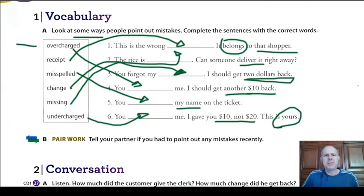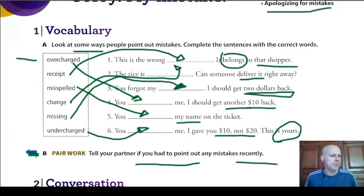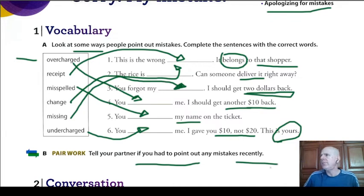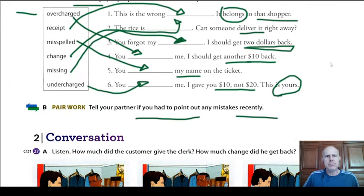Let's go and see Part B. Tell your partner if you had to point out any mistakes recently. For example, I had to ask the bus driver for the correct change last week — he gave me a dollar back, but he owed me five. One to five is four dollars difference — it's a lot of money, you can have a little snack.